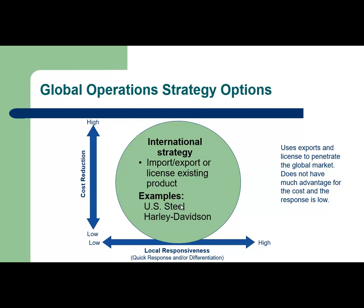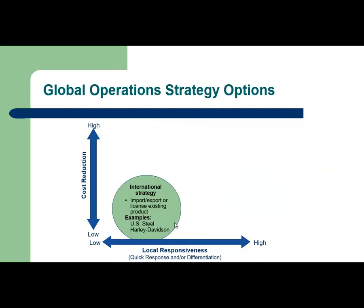After learning about the importance of considering the global environment, which global operations strategy should the company use? There are more than one strategy available, and choosing a strategy will be based on the type of product or service provided. If you have to import, export, or license existing products, then you follow what is called an international strategy. This strategy does not have much advantage for cost or local market response, and resides in the lower left corner of the strategy graph.